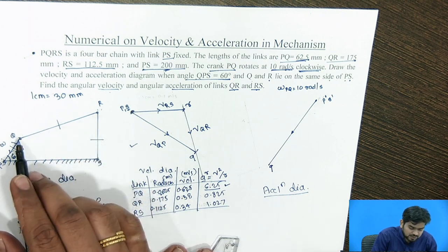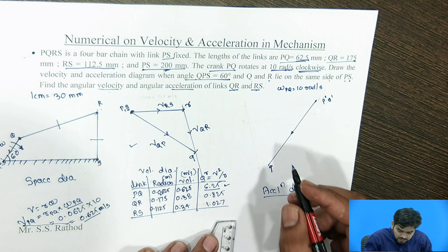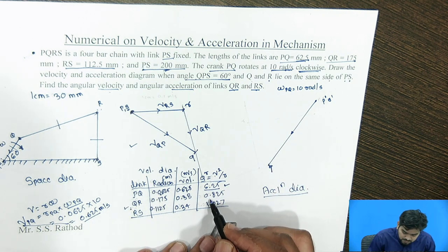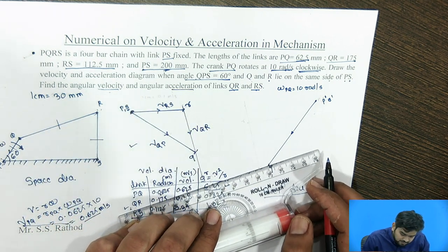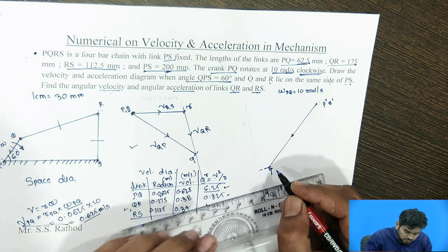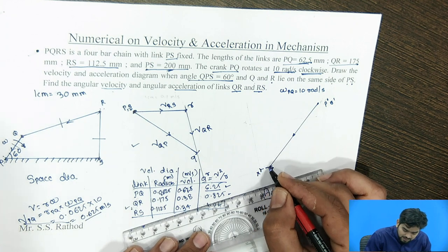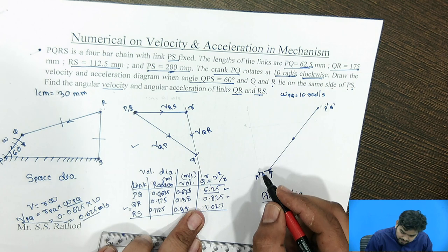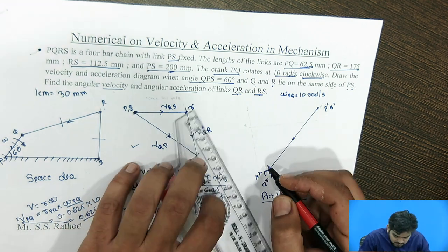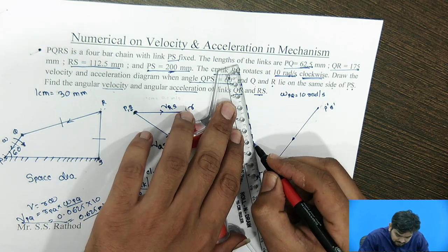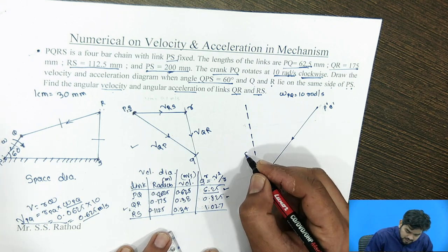After obtaining Q', link QR has two components: radial and tangential, which are perpendicular to each other. The radial component of QR is 0.825. We draw a line parallel to QR for the radial component, giving point X below Q' with magnitude 0.825. From point X, we draw a perpendicular line for the tangential component of QR, but its magnitude is not yet known.